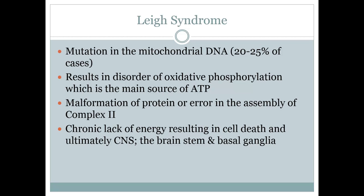About 20 to 25% of Leigh's syndrome cases are due to a mutation of the mitochondrial DNA, which is directly where succinate dehydrogenase is. This results in a disorder of the oxidative phosphorylation cycle, which is the cell's main source of ATP. It can either be from a malformed protein or an error in the assembly of complex II. Because the cell is not getting as much energy or ATP as it needs, there will be a chronic lack of energy resulting in cell death.